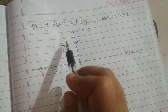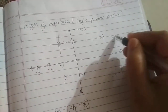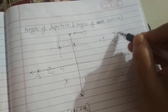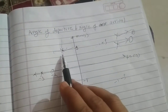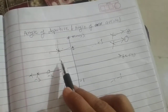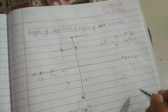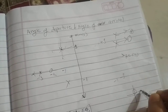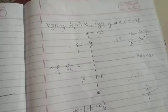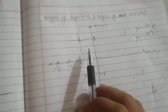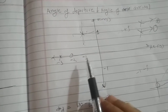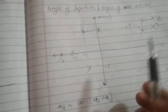So from which quadrant does it depart? Root locus will start from the pole and end at the zero or at infinity. If there is a complex pole, from which quadrant it departs is the angle of departure. In the case of a zero, at which angle or quadrant the root locus arrives is called the angle of arrival. This applies to complex poles or zeros only — for real poles or real zeros there is no need to find angle of departure or arrival.